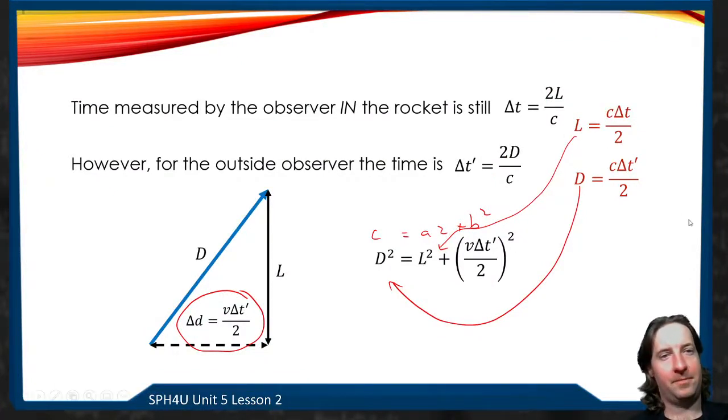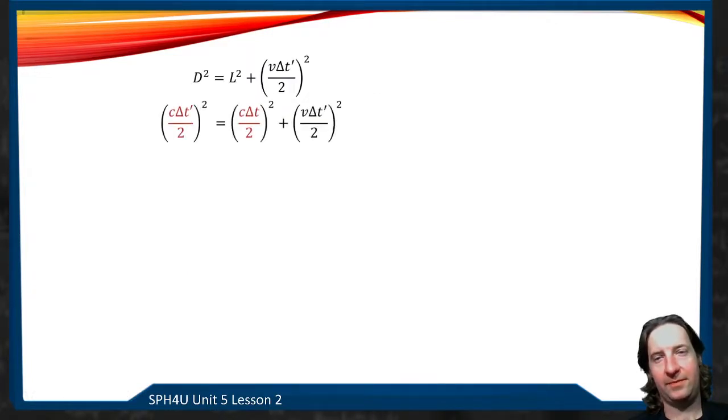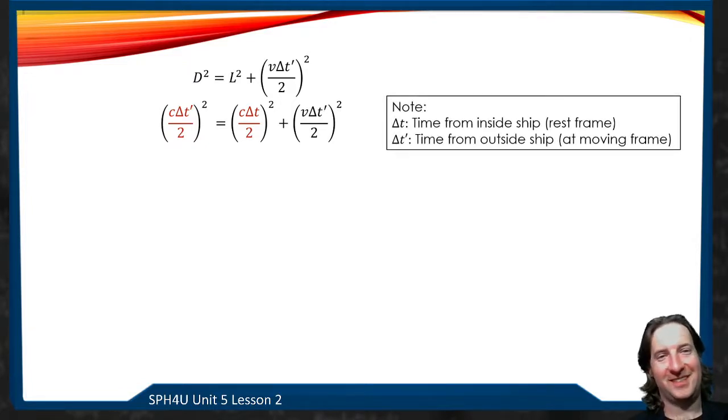Now, rearranging these equations, I can come up with an expression for L that I can substitute in and an expression for D that I can substitute in. So if I now plug these into my Pythagorean theorem, now I'm going to have C delta T prime. Remember, that's the time that the observer outside, the stationary observer, sees the moving frame. That's delta T prime. So delta T is the time it takes inside. That's what the observer inside the spaceship sees. Delta T prime is from the outside.